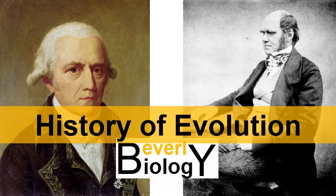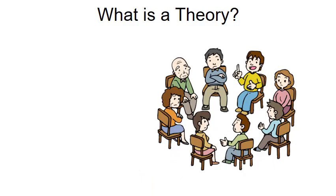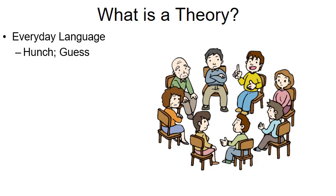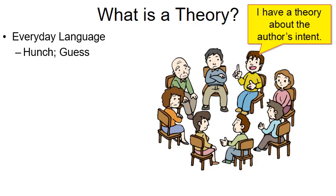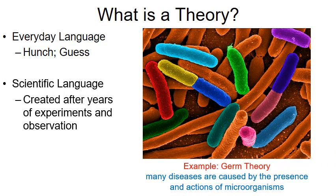In this video we're going to talk about a brief history of the theory of evolution. First, we want to quickly discuss what a theory is. In everyday non-scientific language, it's generally viewed as a hunch or a guess. For instance, here we have a group of people discussing a book, and one guy says 'I have a theory about the author's intent.' He's really about to share his interpretation — another person may have a very different one. The way he's using the word 'theory' causes misleading problems when we talk about theories in science.